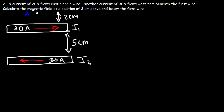First we need to determine the direction of the magnetic field. Using the right-hand rule on wire 1: curl your fingers around the wire with your thumb pointing to the right. The magnetic field circles in this direction — above the wire it's coming out of the page, and below the wire it's going into the page. We'll call this B₁.